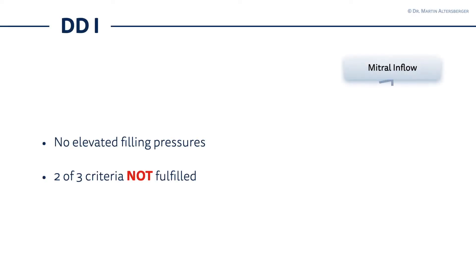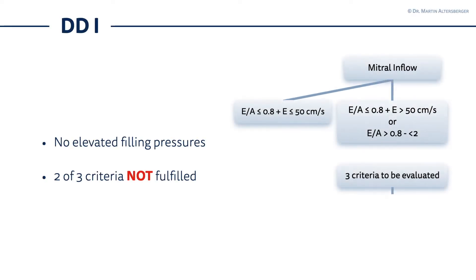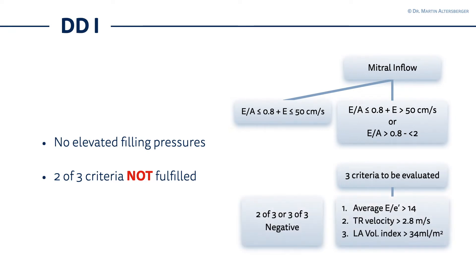Hello, it's Dr. Macho for heart and lungs focused ultrasound. In the last few lectures we were talking about diastolic dysfunction grade 2 and grade 3, and several measurements you have to acquire to differentiate between diastolic dysfunction grade 2 and indeterminate. Now it is time to continue with diastolic dysfunction grade 1, where you won't find elevated filling pressures.